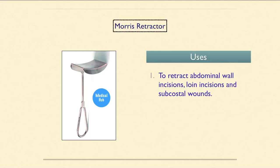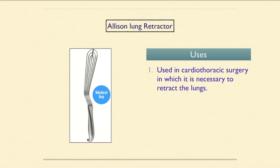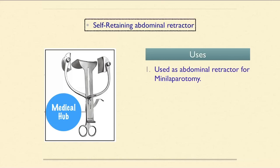The Morris retractor is used to retract abdominal wall incisions, loin incisions, and subcostal wounds. The Harrington retractor is used to hold back tissue and deep organs in the abdomen. The Allison lung retractor is used in cardiothoracic surgery where it is necessary to retract the lungs. The self-retaining abdominal retractor is used as an abdominal retractor for mini-laparotomy.